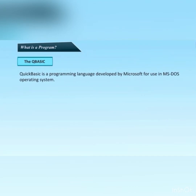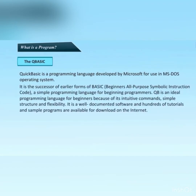QBASIC is a high-level language developed by Microsoft for use with the MS-DOS operating system. QBASIC is a successor of earlier forms of BASIC — Beginner's All-purpose Symbolic Instruction Code — a simple programming language for beginning programmers. QBASIC is an ideal programming language for beginners because of its intuitive commands, simple structures, and flexibility. It is well-documented and hundreds of tutorials and sample programs are available for download on the internet.